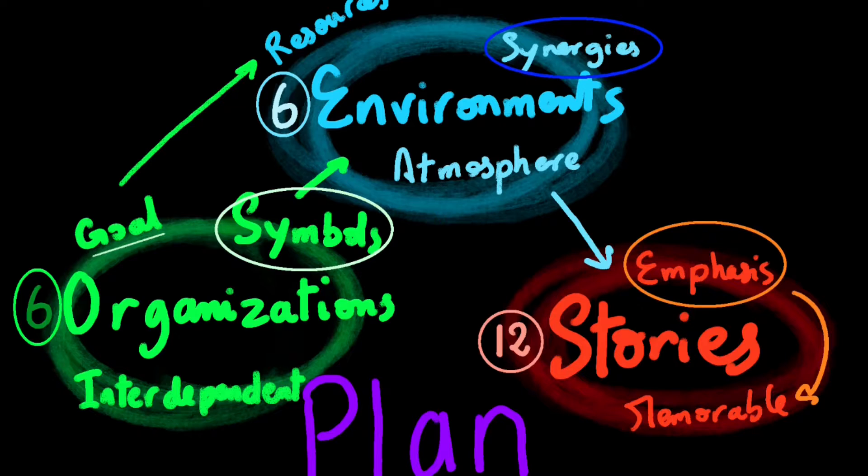The numbers indicated here are a baseline. You will need a minimum of six organizations, six environments, and a minimum of twelve stories. This number may highly vary depending on the genre you're using or the story length.